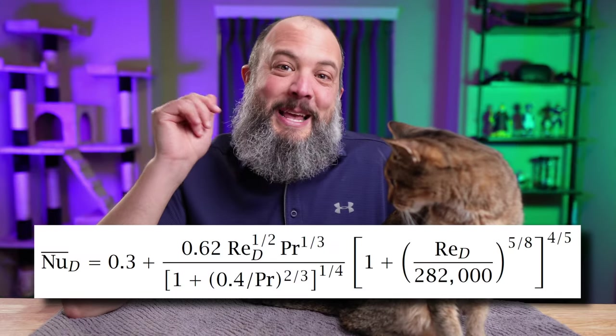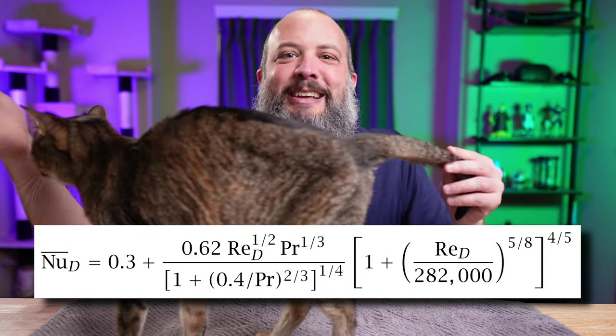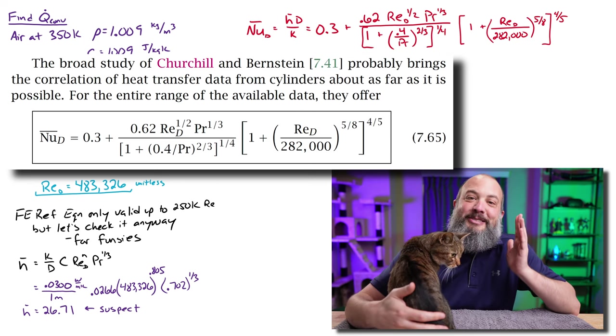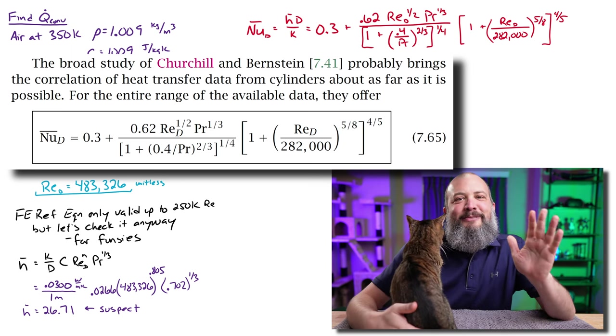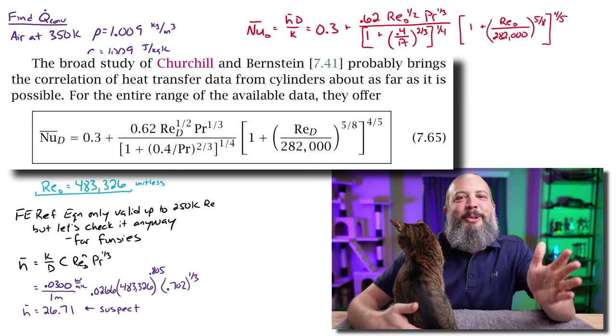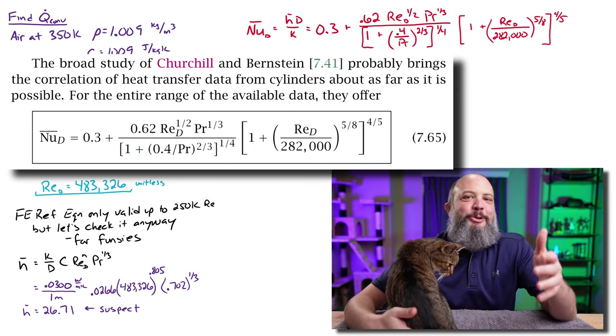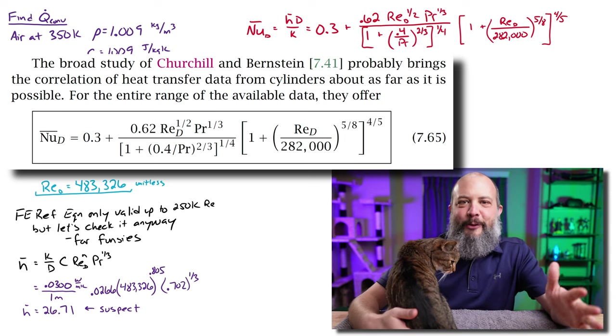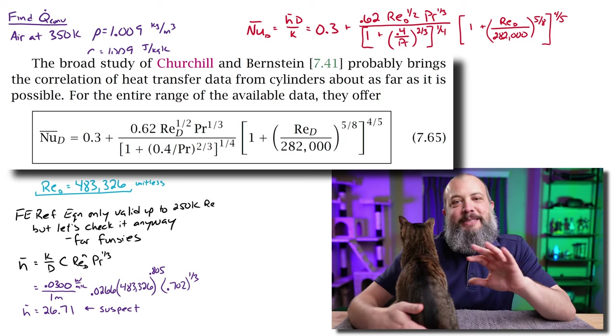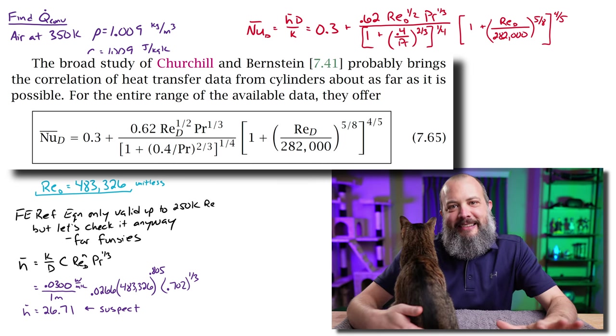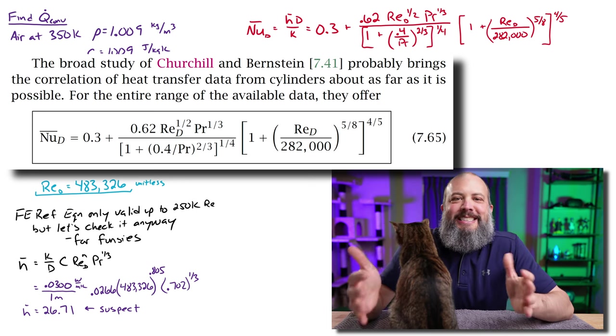Speaking of super quick and easy, look at this gigantic beast. So here is the equation that we're actually going to use. Is this not the most stupidly complex equation you've seen in your whole college career? We've got something raised to the two thirds, raised again to the one fourth, raised to the five eighths again, raised to the four fifths. This is properly crazy. So let me show you a plot to explain why this is so insane looking.